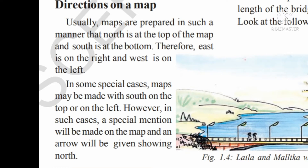However, in such special cases, a special mention will be made on the map and an arrow will be given showing north. In some special maps, south may be on the top or on the left. But in usual maps, north is at the top. When they are making these types of maps, they already mention an arrow showing north.